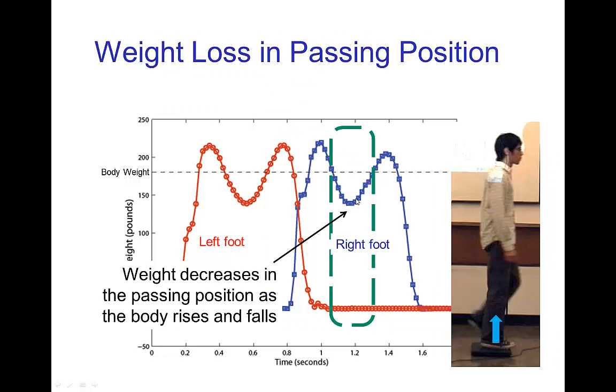Now the dip that occurs in weight is during the passing position. Here we see this very significant drop in the weight when only the right foot is on the plate and the other foot is passing under the torso. This is less weight than if the person was just standing on the plate standing on one leg. It would just be the regular body weight. This is significantly less weight.